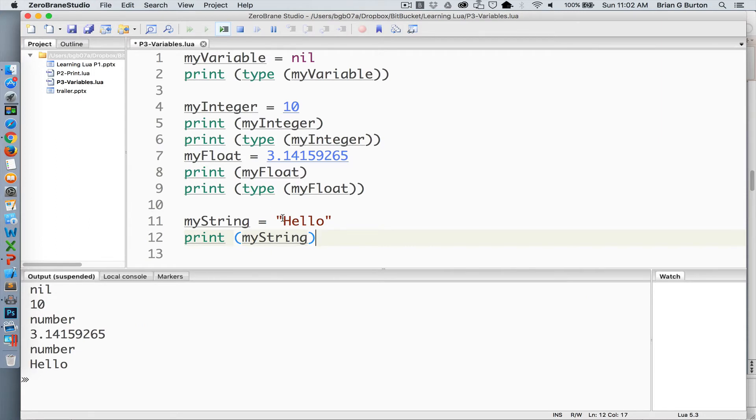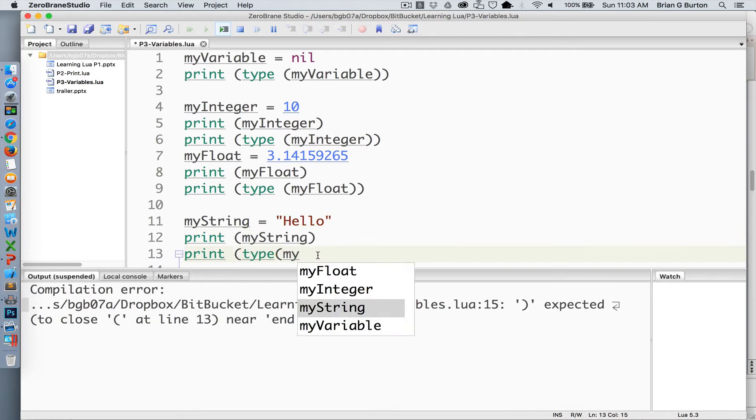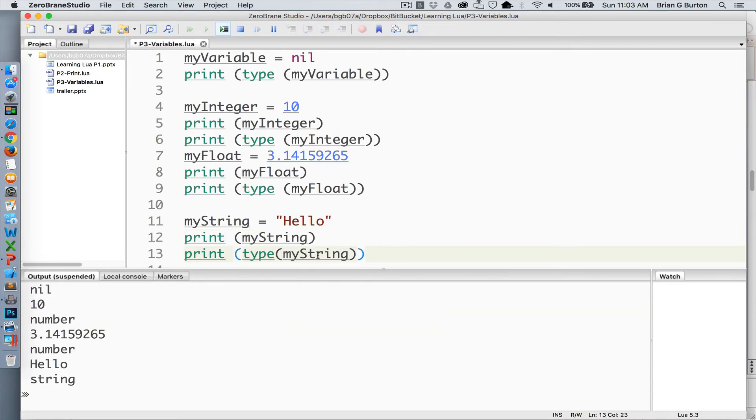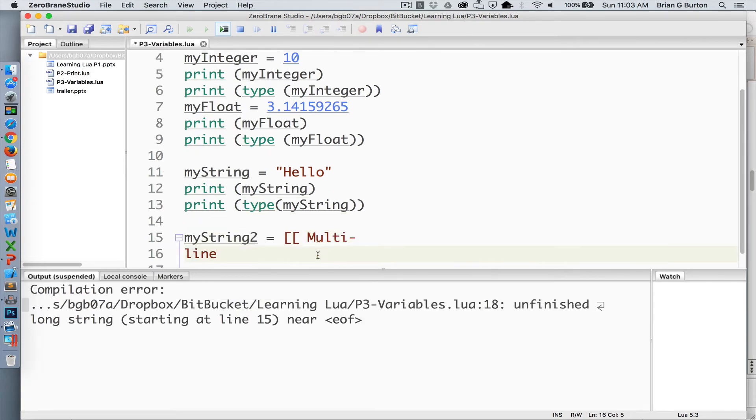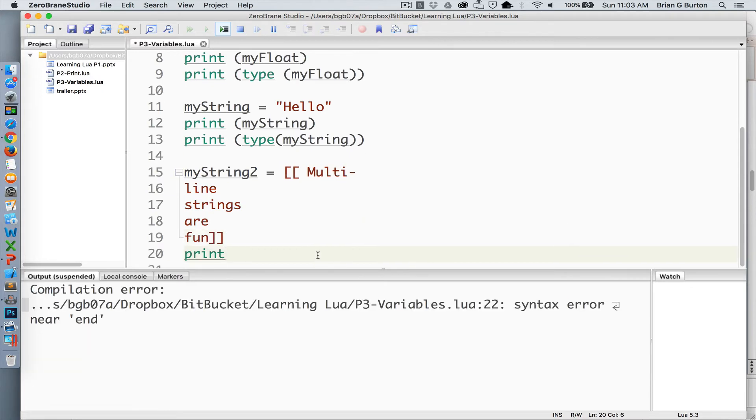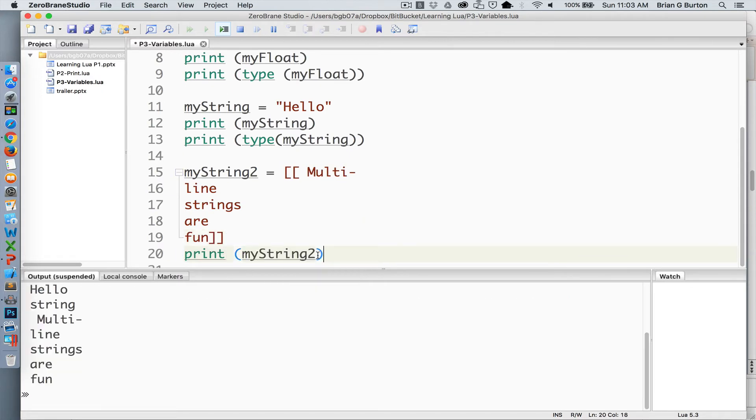Here we have an example of using a double quote to create a string variable. Again, we're printing that out if you want to see the type. It does automatically declare it as a string type. If you want to create multi-line, here I created a multi-line string and print it out. As you can see, quotation marks and single quotes are not required when you're using the double bracket for delineating strings using the block characters.